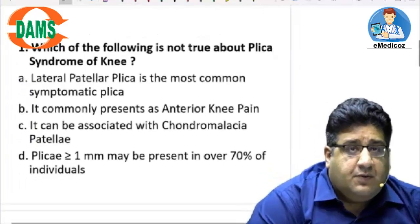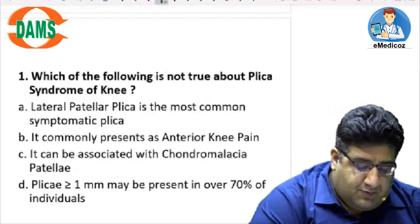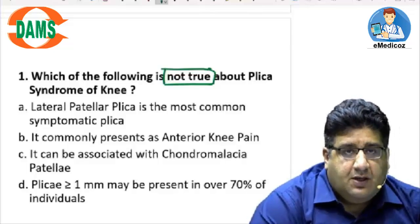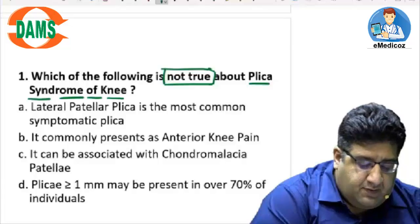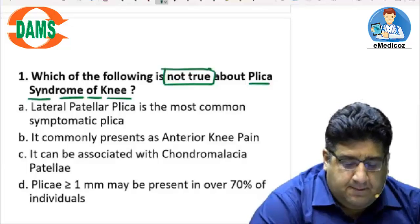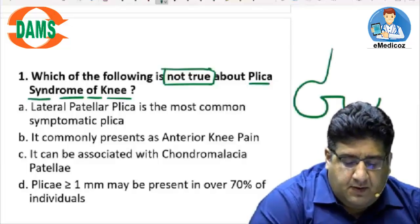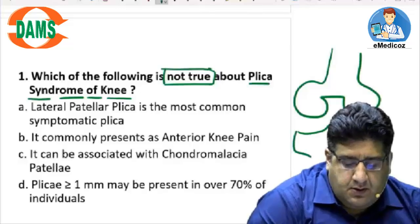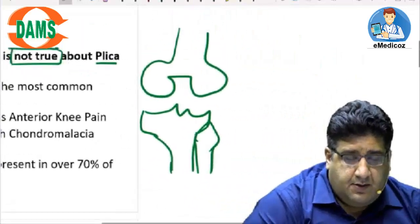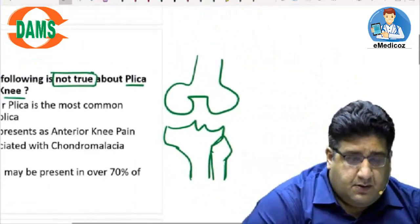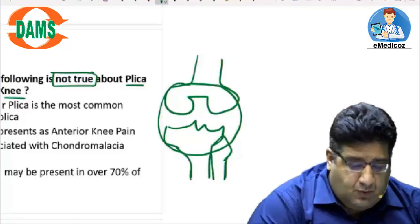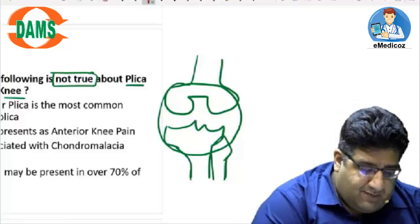Which of the following is not true — you have to be very particular about the terminology used: 'not true.' About plica syndrome of the knee. Let's not get into the options; let's first solve the question. Plica syndrome of the knee — we have femur, tibia, fibula.